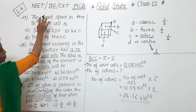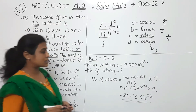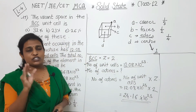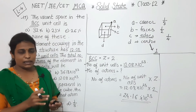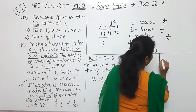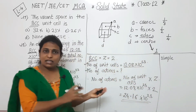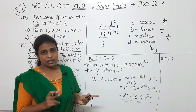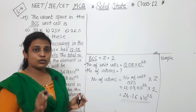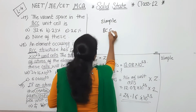Next MCQ, which is the first of this series: the vacant space in BCC. Before discussing vacant space, we need to know the packing efficiency of that unit cell. There is an important table everyone should know. We consider three types: Simple, BCC, and FCC unit cells.